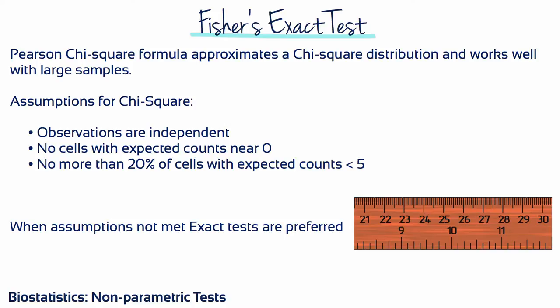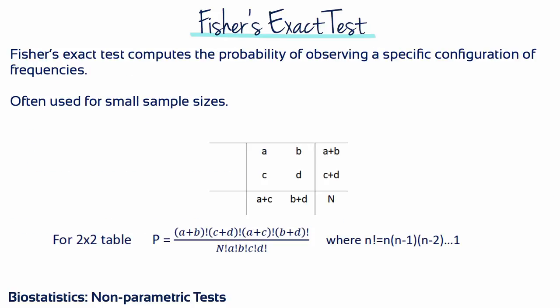An exact test computes the probability directly of observing a particular set of frequencies in a contingency table without relying on approximation to the chi-square distribution. The Fisher exact test is most often used for a 2x2 table with 4 cells, but it can be extended to tables with more cells. Let's label the cells A to D. Fisher devised the test and showed the probability of a specific configuration of cell frequencies can be calculated from the hypergeometric distribution, which simplifies to the formula involving factorials of the marginal totals, sample size, and cell frequencies.